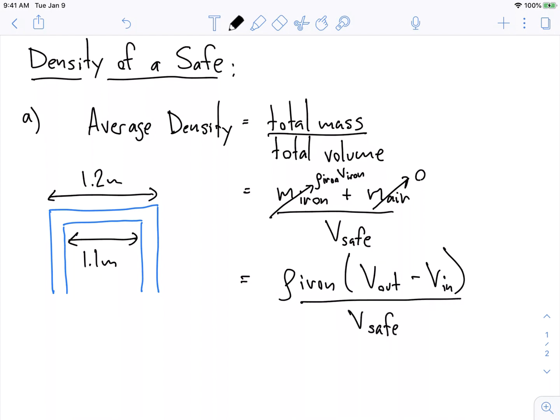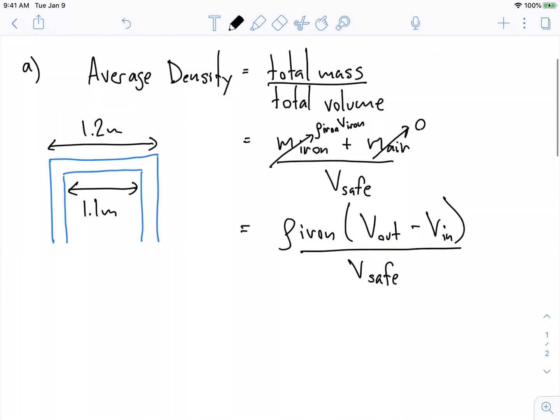All right, and so we can put some numbers in here. We know the mass of iron is 7870 kilograms per meter cubed.